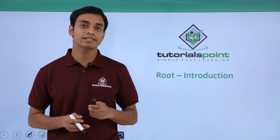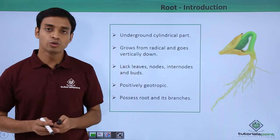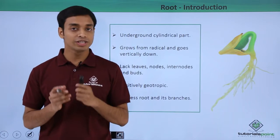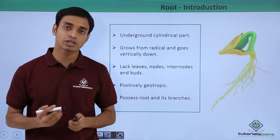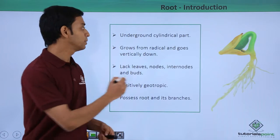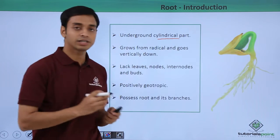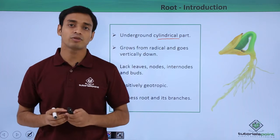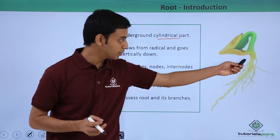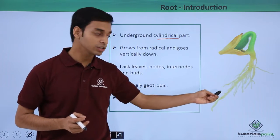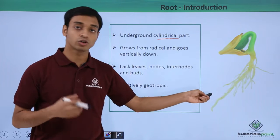Let's see what roots are. Roots are the underground structures which are present below the soil, and typically they have a cylindrical structure — they are in the shape of a cylinder. As you can see over here, this is a typical structure of a root which is growing from a germinating seed.